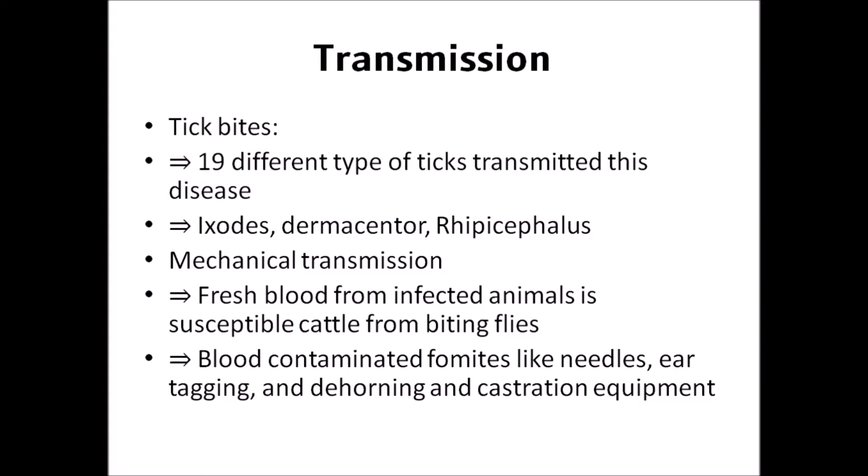Regarding transmission, this is a tick-borne disease. Nineteen different types of ticks can transmit this disease; Dermacentor and Rhipicephalus are some of the common and important ticks. For mechanical transmission, fresh blood from an infected animal can be transmitted to susceptible cattle via biting flies, or through blood-contaminated equipment such as needles, ear tags, dehorning and castration instruments.